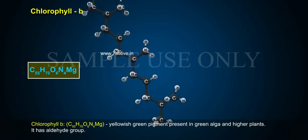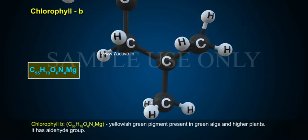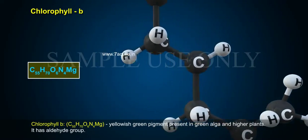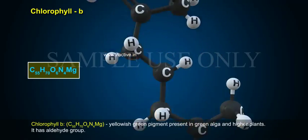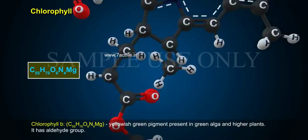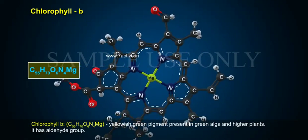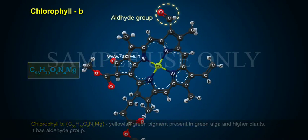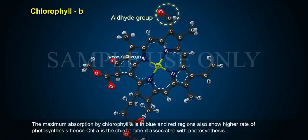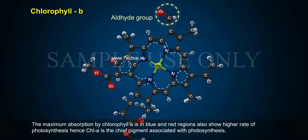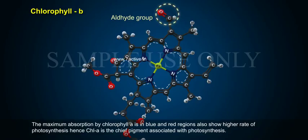Chlorophyll B has the formula C55H70O6N4Mg. It is a yellowish-green pigment present in green algae and higher plants. It has an aldehyde group. The maximum absorption by chlorophyll A is in the blue and red regions, which also show a higher rate of photosynthesis. Hence, chlorophyll A is the chief pigment associated with photosynthesis.